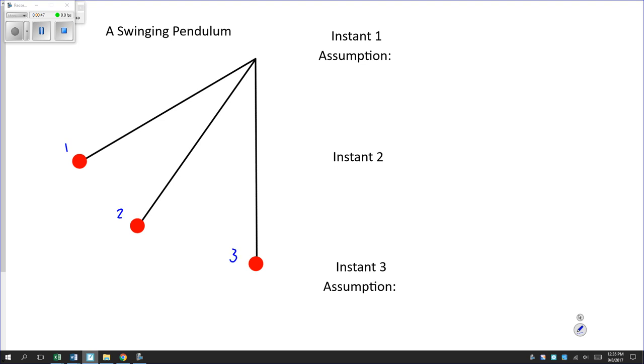Let's make an assumption about instant 1. At instant 1, let's assume this is top of swing. Maybe even a release point, but maybe not. Maybe this thing has swung up and gotten to position 1, and then is about to swing back.